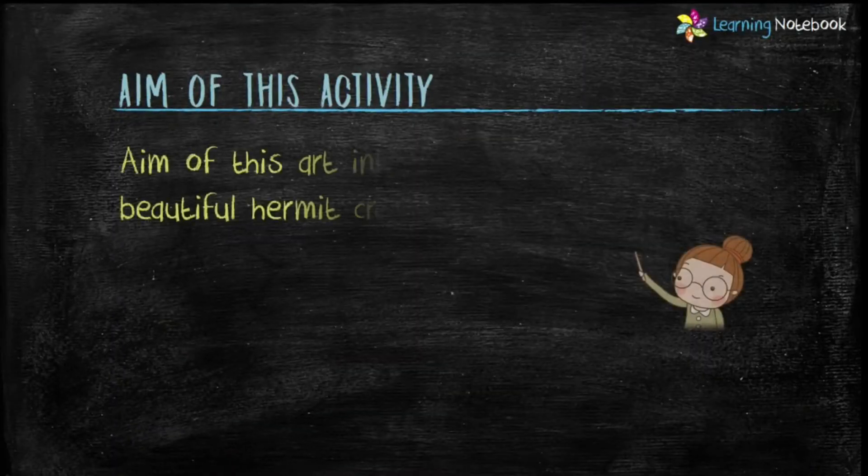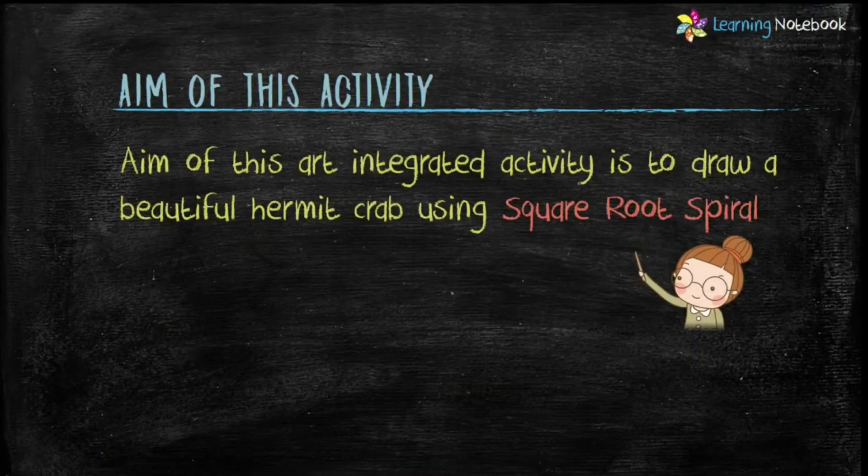The aim of this art integrated activity is to draw a beautiful hermit crab using a square root spiral.